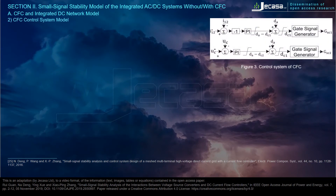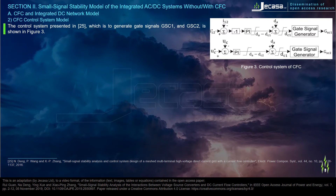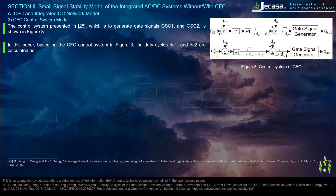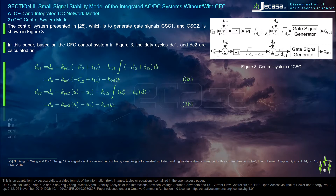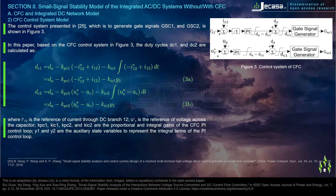The CFC control system model presented in reference 25, which generates gate signals Gsc1 and Gsc2, is shown in Figure 3. Based on this control system, the duty cycles Dc1 and Dc2 are calculated as follows, where i12* is the reference of current through DC branch 12, Vc* is the reference of voltage across the capacitor, Kpc1, Kic1, Kpc2, and Kic2 are the proportional and integral gains of the CFC PI control loops, and y1 and y2 are auxiliary state variables representing the integral terms. The final dynamic equations are derived by substituting equation 3 into equation 2.